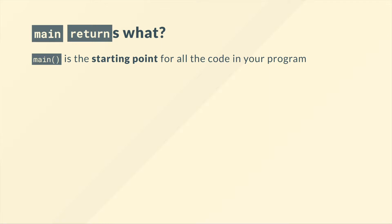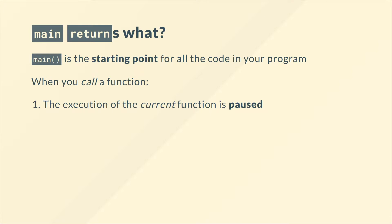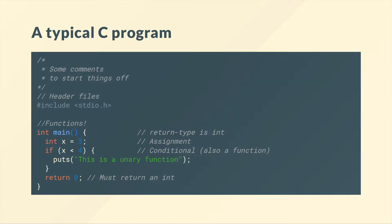What is main and what does return exactly mean? Main is the starting point for all the code in your program — C looks for your main function, and if it can't find it, it's not going to compile. When you call a function, the execution of the current function is paused and the function you call is executed. So when we run an if conditional, the main function is paused, the conditional does its check, and then it returns control back to main.